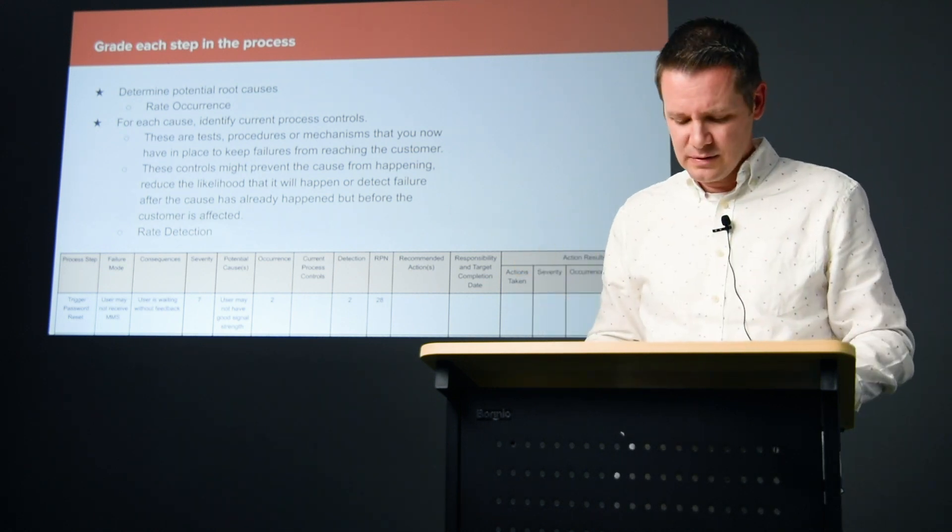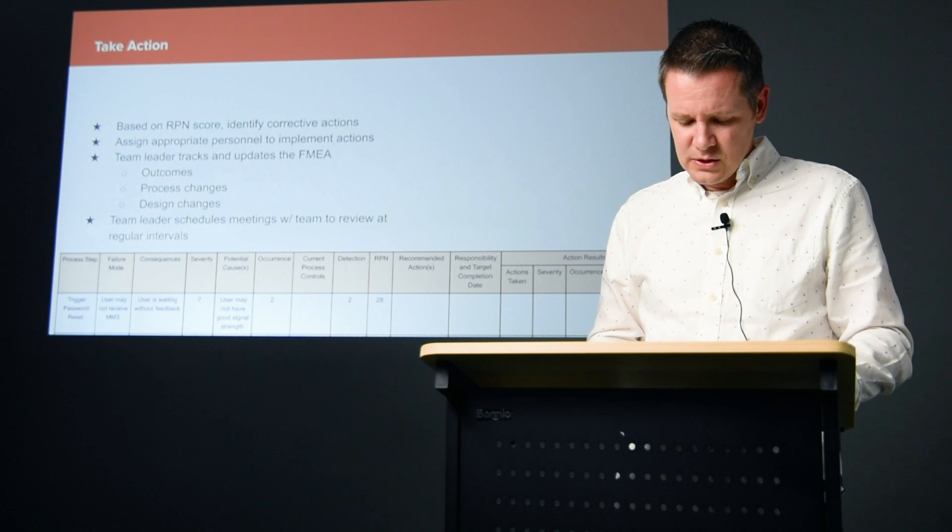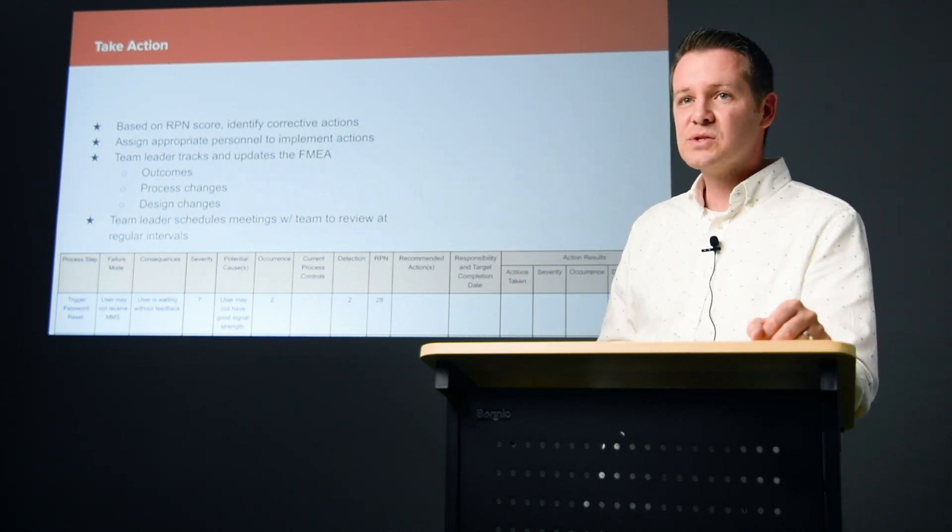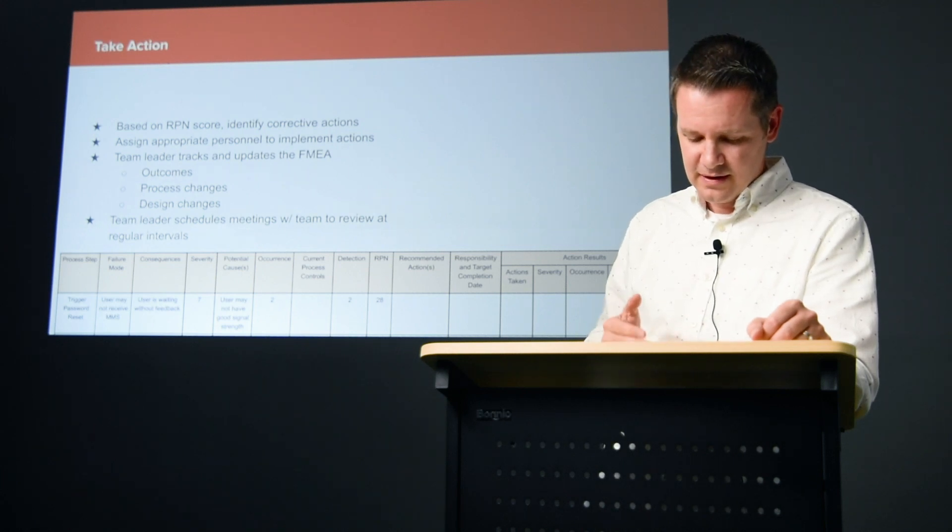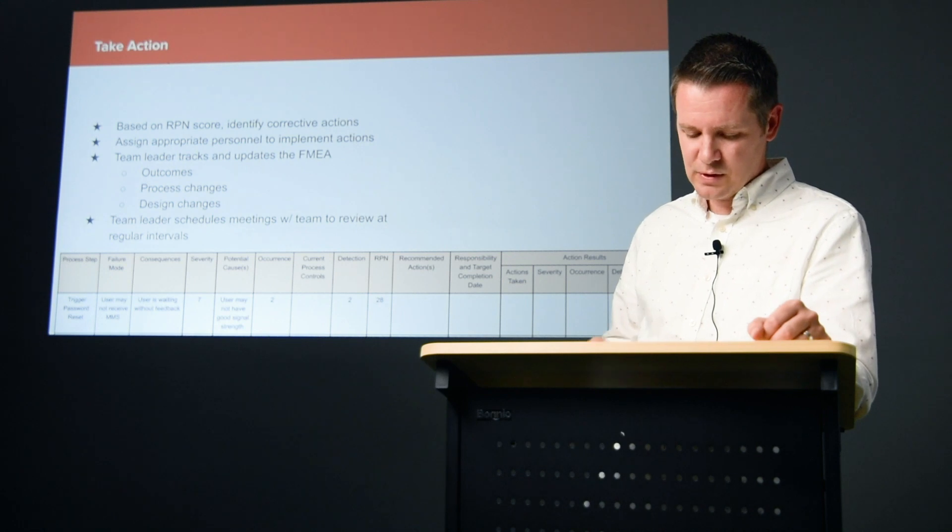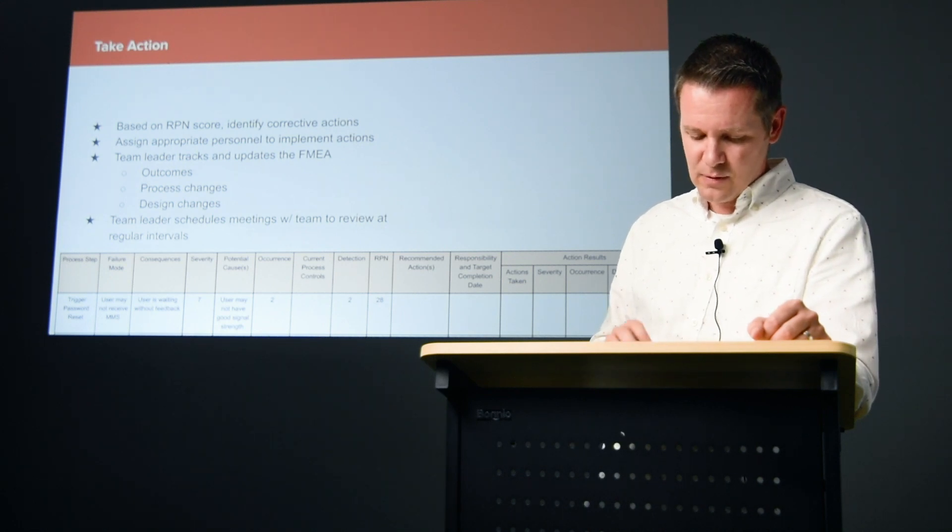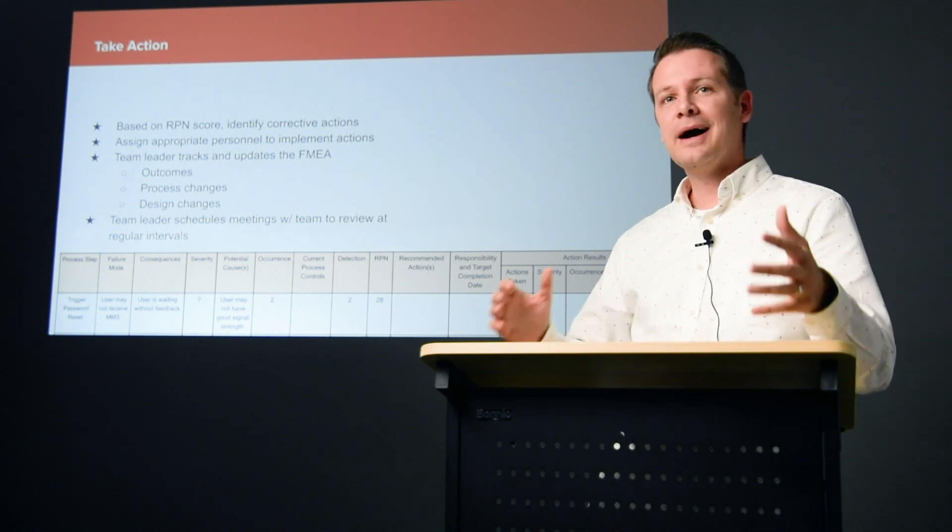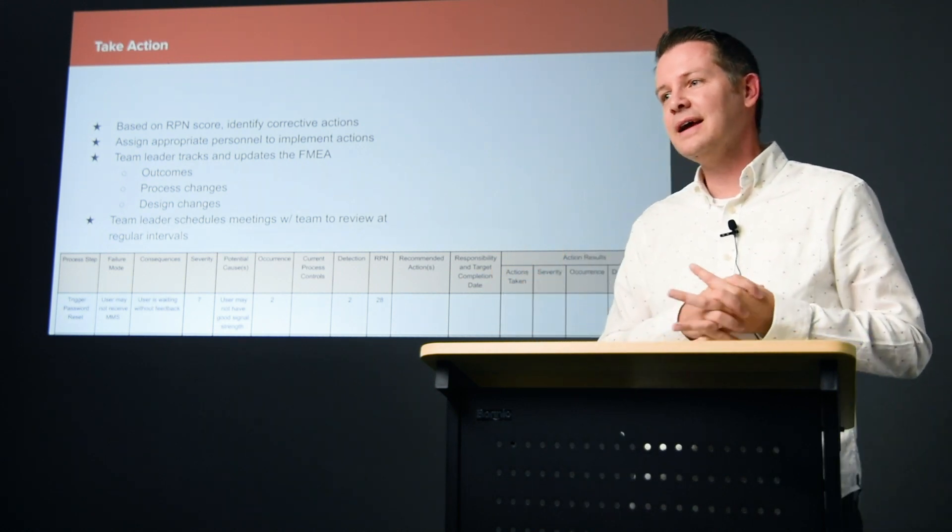We rate the detection. With all of that, we can now get an RPN score, the value of all those three points of data. Then we identify corrective actions: if we got a score of 80 or higher—you can get very high actually—what should we do now? This is a really bad problem.